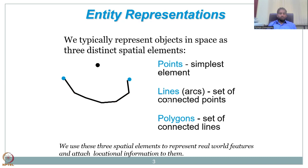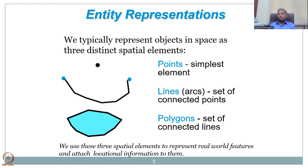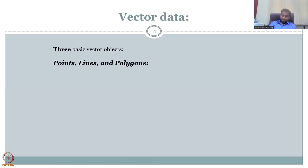Then we move on to the polygon, which is a set of connected lines, and each line has its own points. So we use these three spatial elements — points, lines, polygons — to represent real-world features or objects. These objects have location information stored as XY coordinates, XY pairs, and they are stored separately in the files.